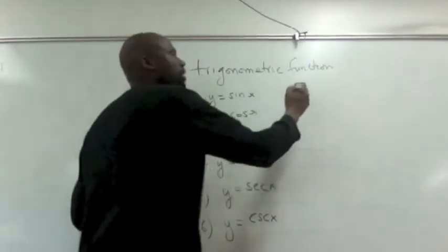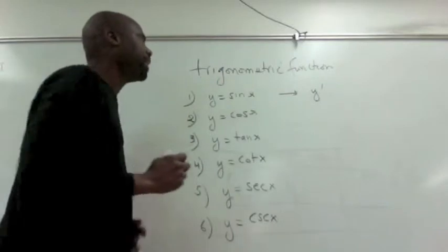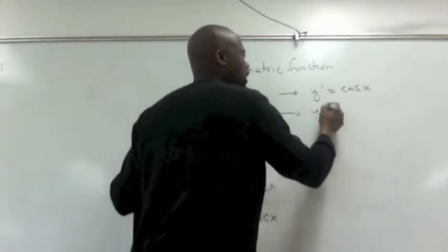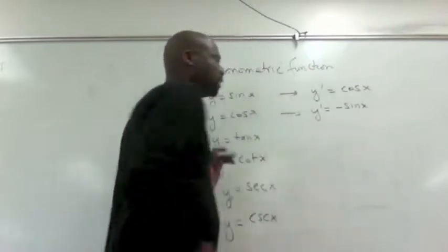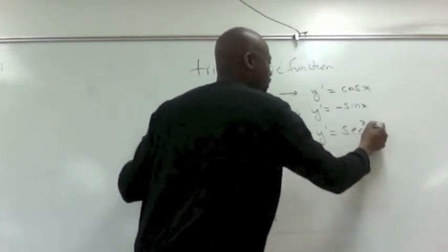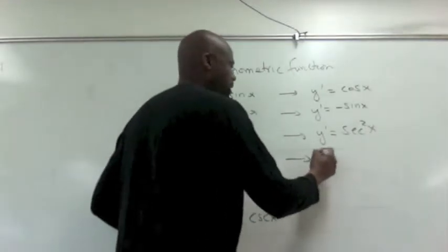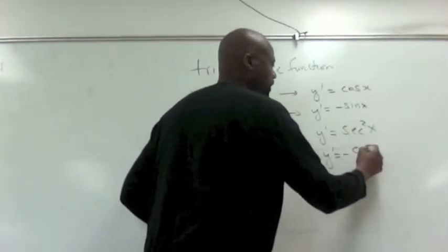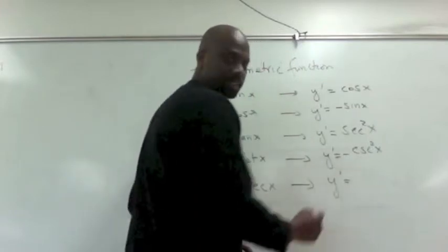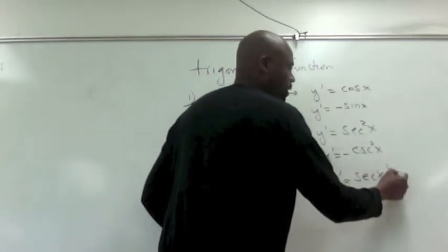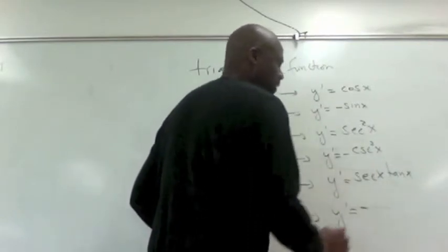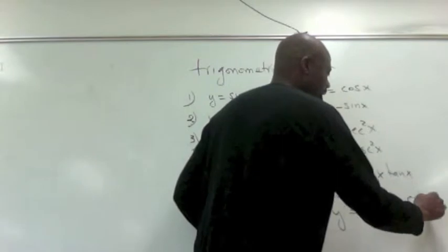The derivative, y prime, of sine is cosine of x. The derivative of cosine of x is negative sine of x. The derivative of tangent x is secant squared of x. The derivative of cotangent x is negative cosecant squared of x. The derivative of secant x is secant x tangent x. And the derivative of cosecant x is negative cosecant of x cotangent of x.